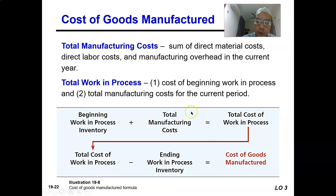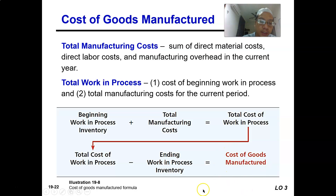So you have your total manufacturing cost for the period, plus the beginning balance of items not completely done. You add them together, then minus those items that at the end of the period have not completely done. Then you have the cost of goods manufactured for the period.